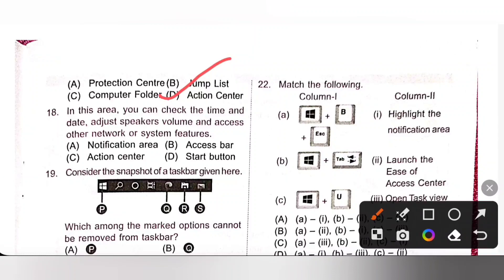Action center is located on the taskbar. It allows you to quickly access the basic settings about Windows. So, option D is the correct answer. Eighteenth one.